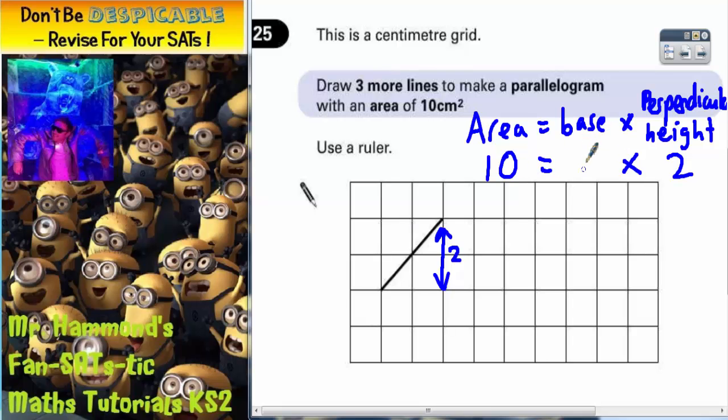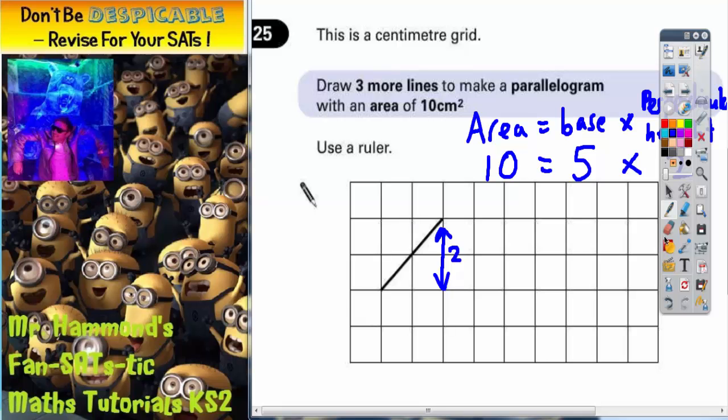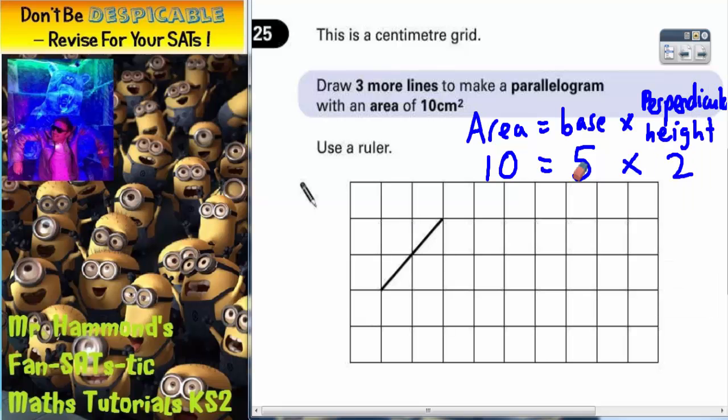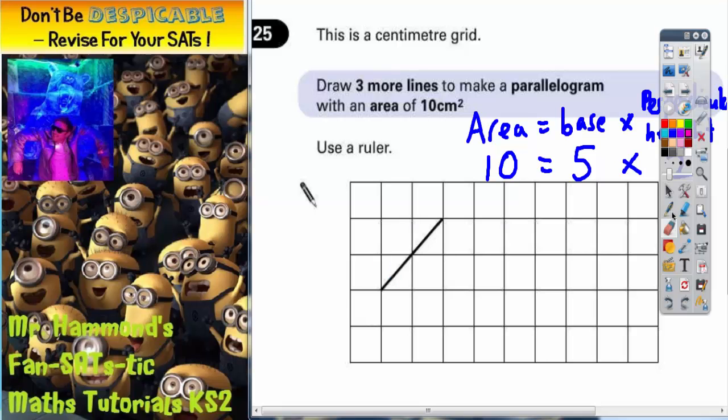So the area is going to be something times 2 to make 10. 10 equals something times 2. Well, it won't take you long to work out that it's got to be 5. So the base has to be 5. So what we're saying here is that the bottom of the parallelogram will have to be 5 squares long.